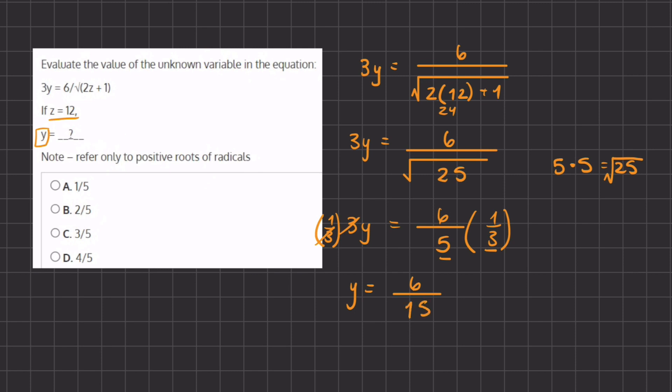Now this is going to be the value of y, but we need to simplify this fraction before we look at our answers. We can divide the numerator and denominator equally by 3. So 6 divided by 3 gives us 2, and 15 divided by 3 gives us 5. So this is the simplified version of 6 divided by 15, which is the value of y.